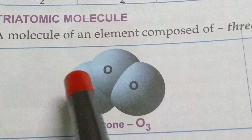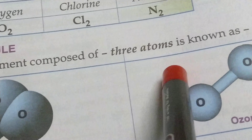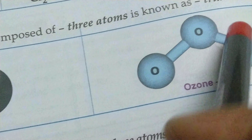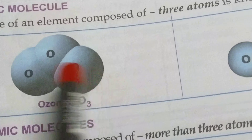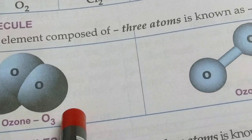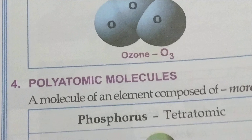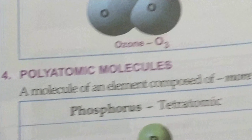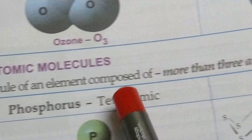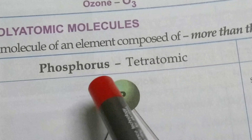Triatomic molecule: a molecule of an element composed of three atoms is known as a triatomic molecule, like ozone — there are three atoms of oxygen combined with each other to form an ozone molecule. Next, polyatomic molecules: a molecule of an element composed of more than three atoms is known as polyatomic molecules.